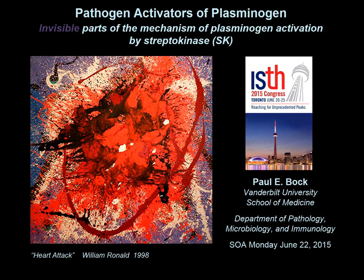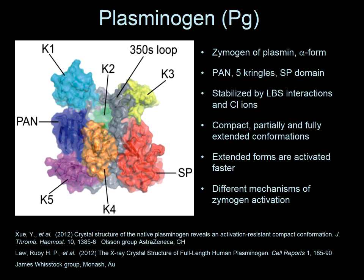This is the structure — one of two structures of plasminogen, the full-length protein gluplasminogen, which is the zymogen form of plasmin. This is a crystal structure of the compact conformation solved by two groups: Dr. Wistock's group in Australia and Olsen's group at AstraZeneca in Switzerland. Plasminogen consists of an immunoterminal PAN module — which stands for PG-Apple-Nematode — a unique fold.